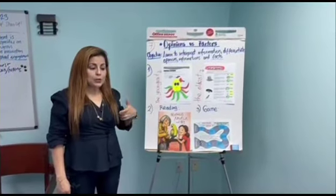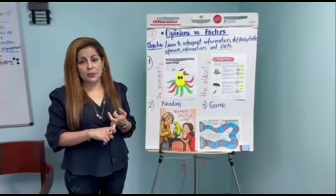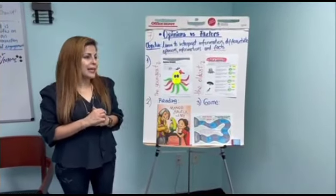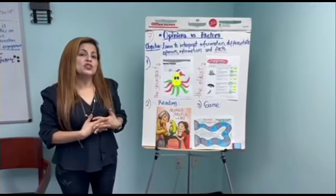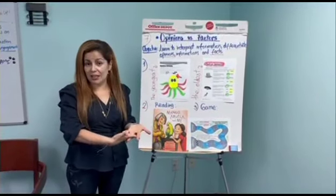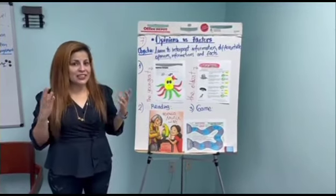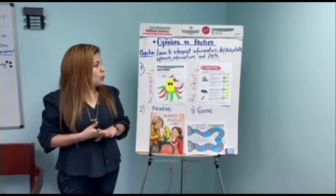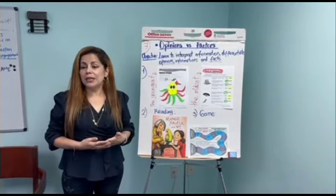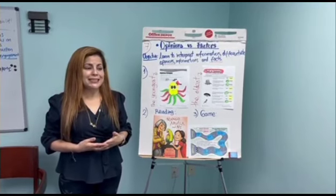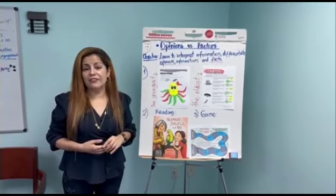To start, we need to explain to children what is the difference between thoughts and information and then give them some examples. An opinion is when a person shares what they think or how they feel about a topic, but a fact is the general truth. For example, 'I like cats' would be an opinion, but 'cats have four legs' would be a fact.